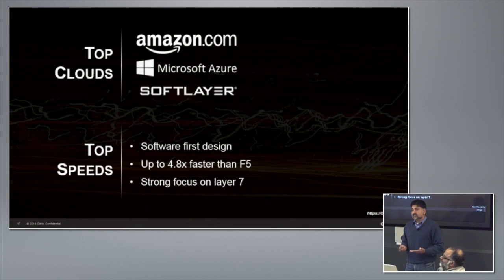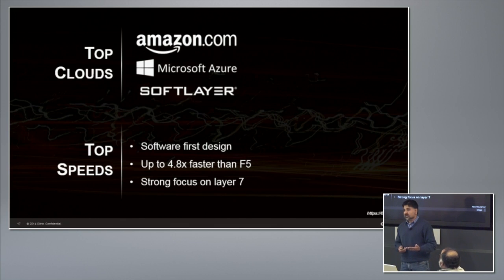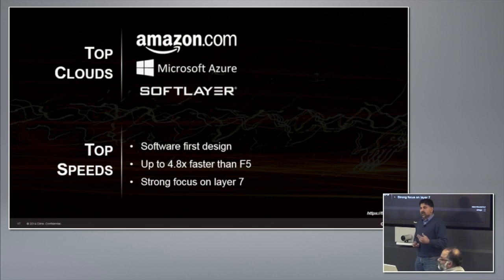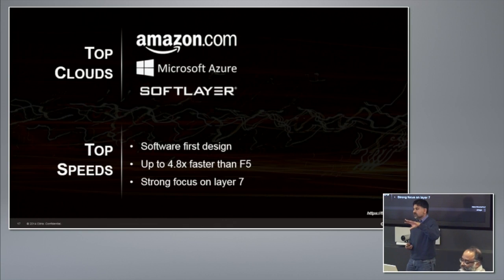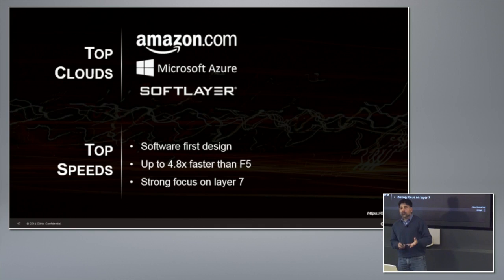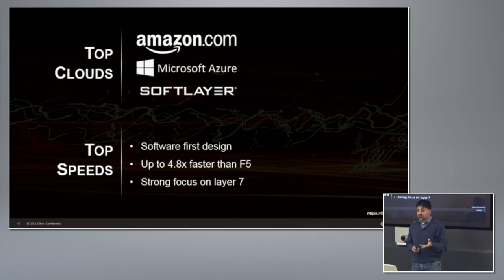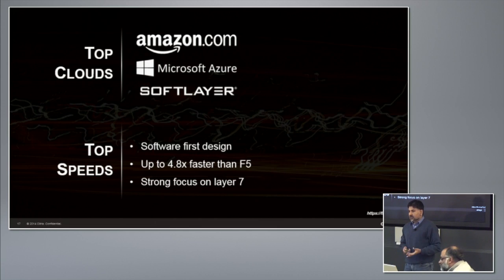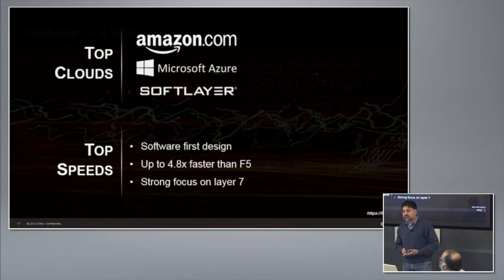Our focus around performance has landed us in a lot of clouds and enterprises. Clouds like AWS and SoftLayer are using NetScaler not just as an over-the-top service from the marketplace, but as an underpinning that supports the infrastructure itself. We also have a very strong enterprise presence, where our performance characteristics have allowed us to displace competitors who have become very complex — and that performance penalty is something no one ever wants to pay.